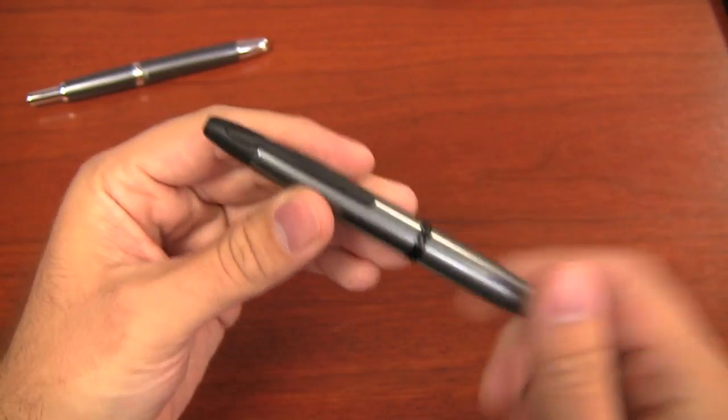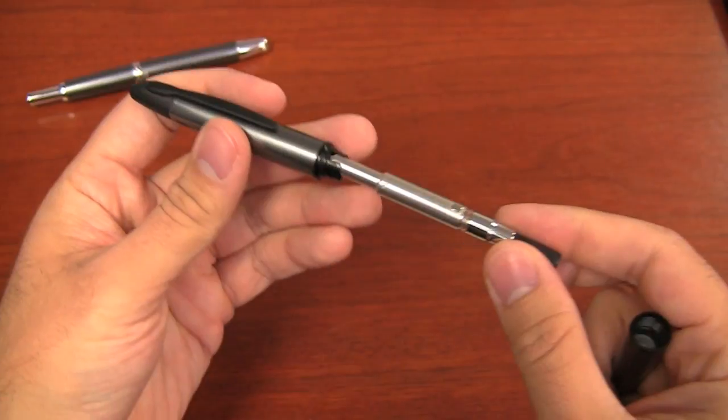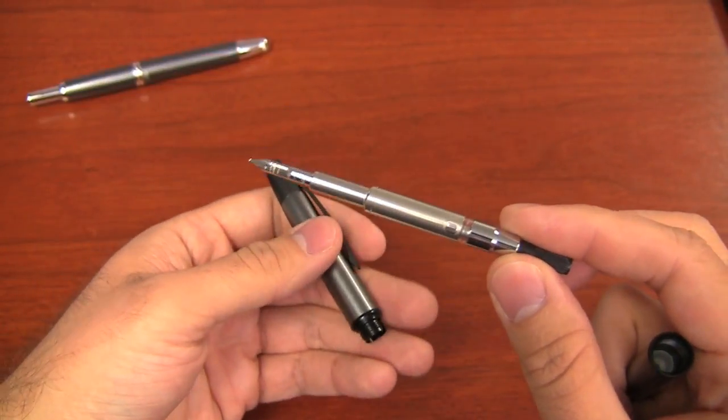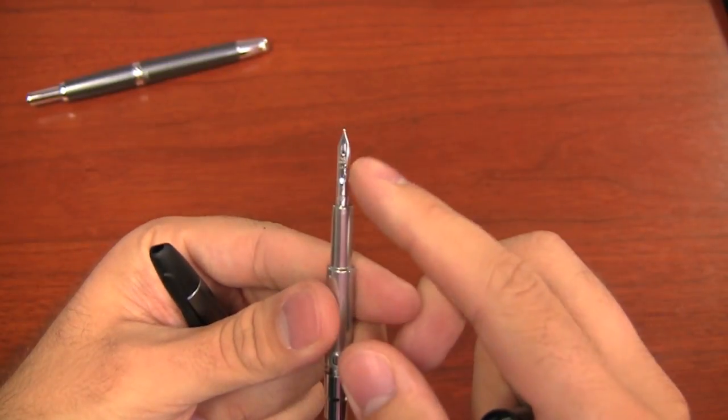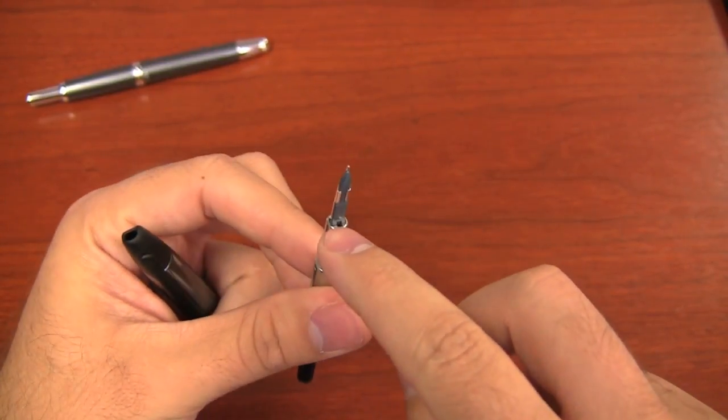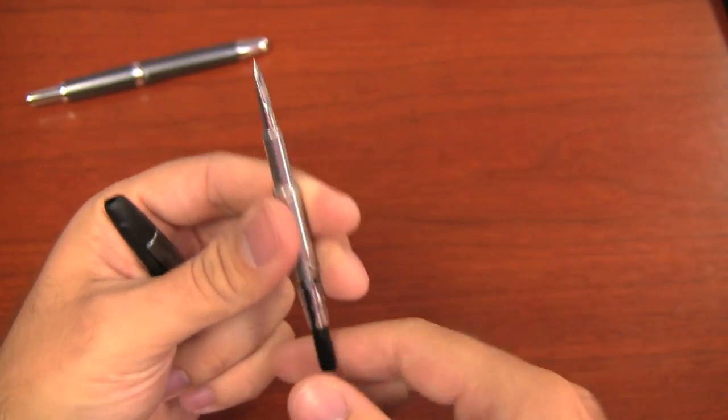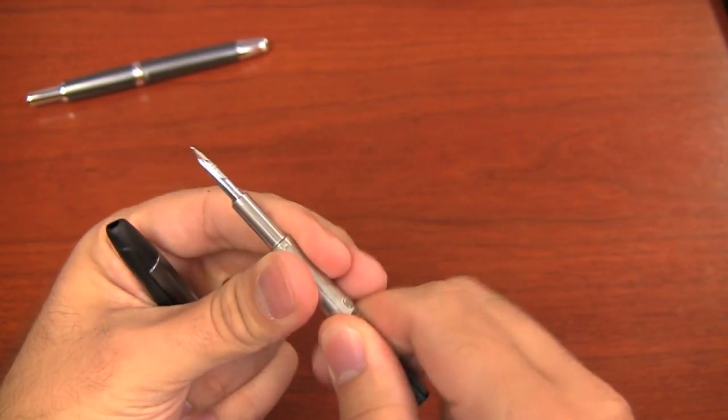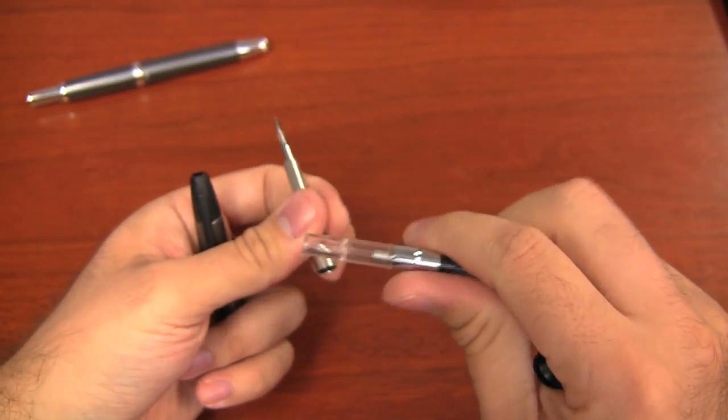But, you know, I've covered the Vanishing Point in several other videos. But basically, there's a nib unit here in the middle that just pulls out. Nice, skinny nib here. The filler hole is right here. So when you fill it, you need to immerse the nib all the way up to this point. It's got a removable, just friction fit Pilot Con 50 converter.